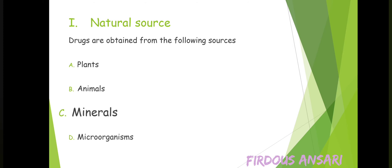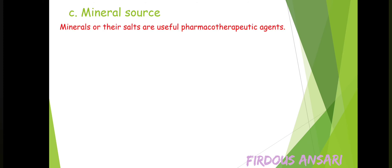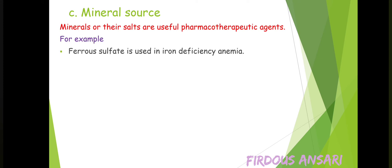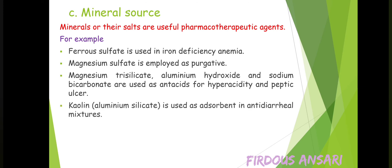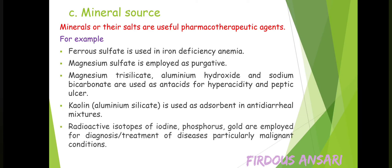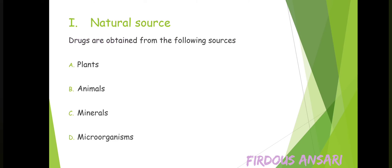Talking about mineral sources — minerals or their salts are useful as pharmacotherapeutic agents. Ferrous sulphate is used in iron deficiency anemia. Magnesium sulphate is employed as a purgative. Magnesium trisilicate, aluminum hydroxide, and sodium bicarbonate are used as antacids for hyperacidity and peptic ulcer. Kaolin, i.e., aluminum silicate, is used as an adsorbent in anti-diarrheal mixtures. Radioactive isotopes of iodine, phosphorus, and gold are employed for diagnosis or treatment of diseases, particularly malignant conditions.